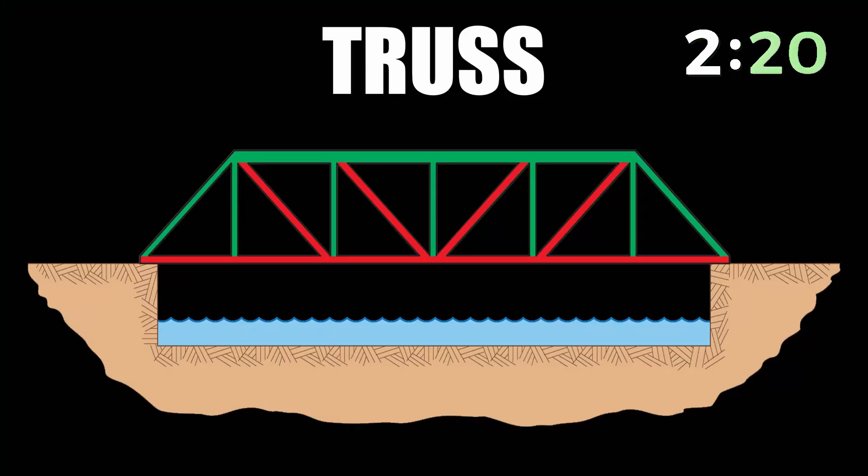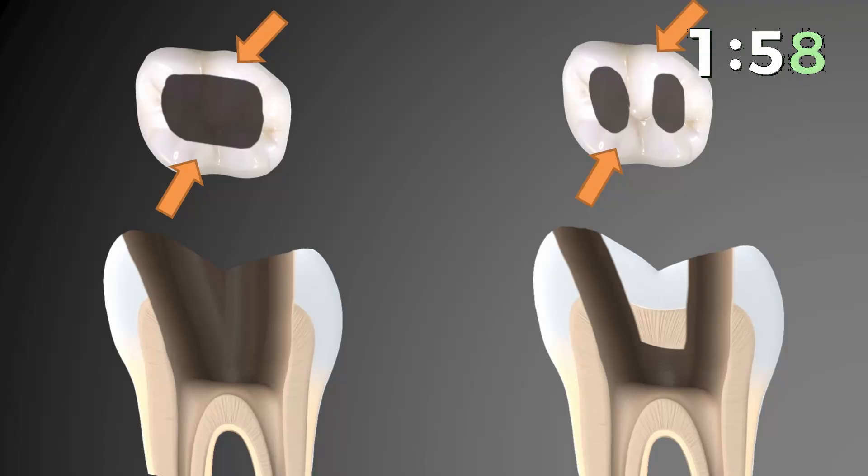A much more conservative access cavity preparation technique has been suggested, called truss access cavity preparation. A truss means two parts of an object are joined together with the help of a beam in between. In the tooth, the different walls are joined by sound tooth structure in between, which is called truss access cavity preparation.